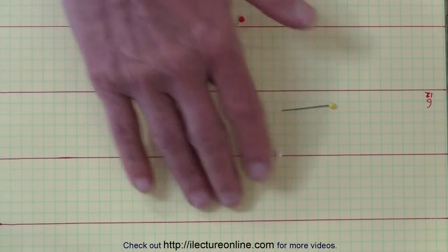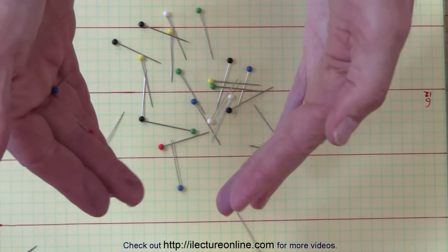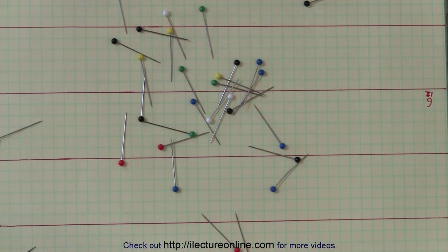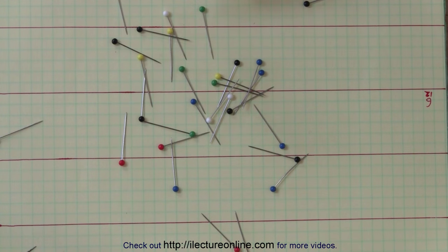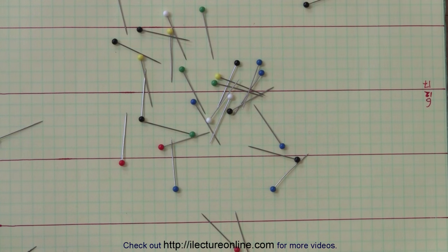Now we're going to toss 30 needles and see what we get. Let's count the ones that hit. So I have 1, 2, 3. So I have 17 needles that hit a line. I'll put down number 17 for 30.